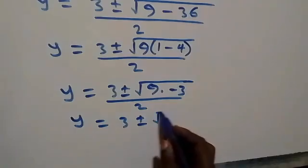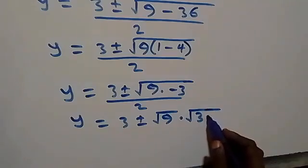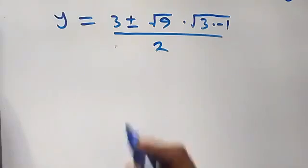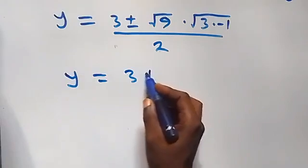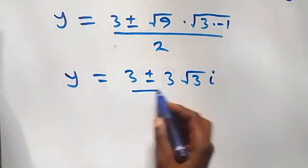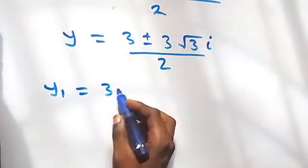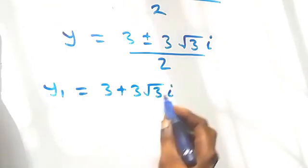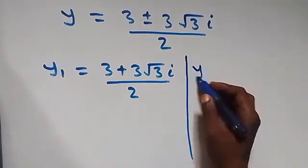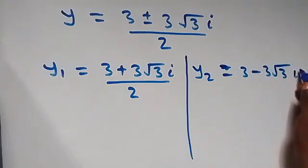Simplifying: √(−27) = 3√3·i, so we have two complex solutions: y₁ = (3 + 3√3·i) / 2 and y₂ = (3 − 3√3·i) / 2.